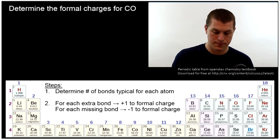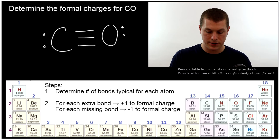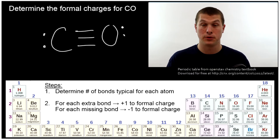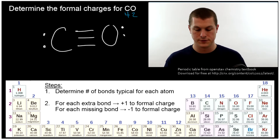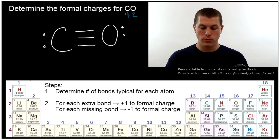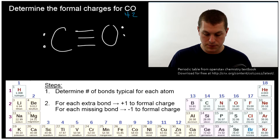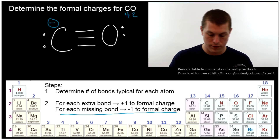Let's do this for carbon monoxide. This is the correct Lewis structure. We want to figure out how many bonds are typical for each atom — carbon wants four bonds and oxygen wants two bonds. So if carbon wants four bonds, you'll notice in this Lewis structure it has three. For each missing bond, that gives us a minus-one formal charge. Since carbon is sharing less of its electrons than it wants to, it has a negative-one formal charge.